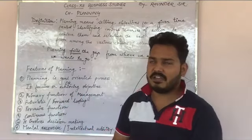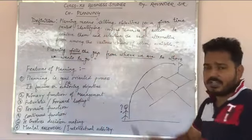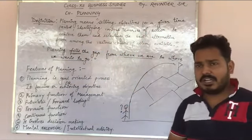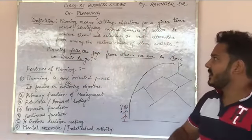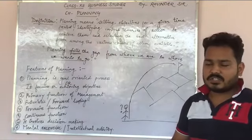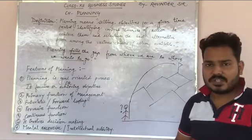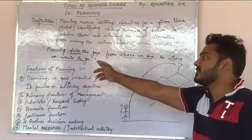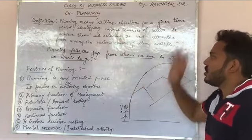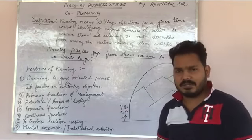So the simple definition is: planning means setting objective for the given time period, identifying various course of actions — किस तरीके से हम उस काम को कर सकते हैं, कौन-कौन से options हैं — और उन options में से सबसे best कौन सा है उसको select करना, i.e., selecting the best alternative from among the various course of actions available.